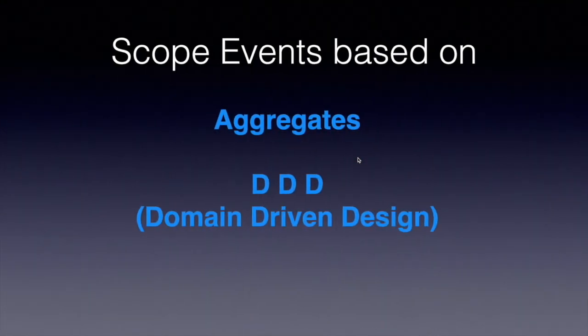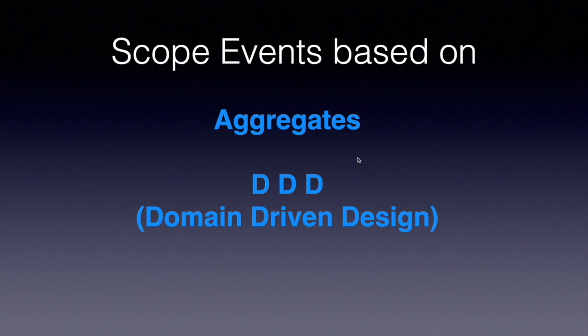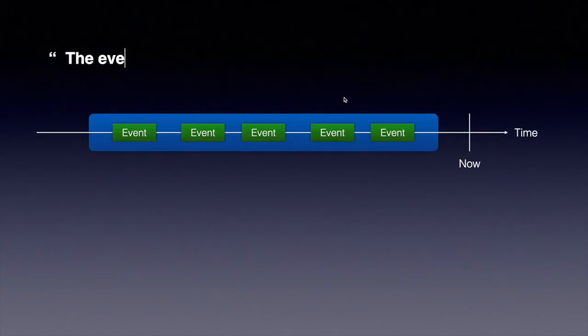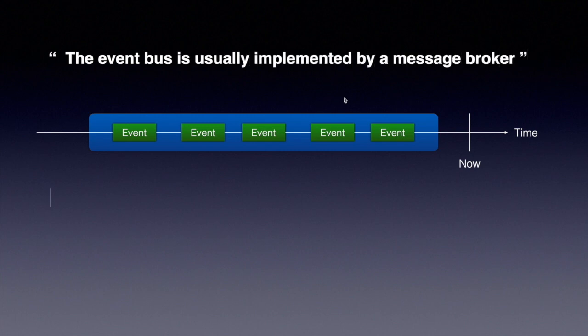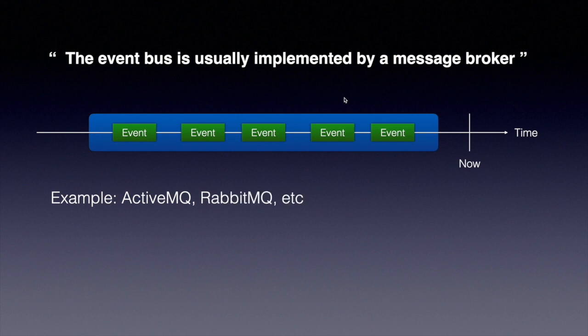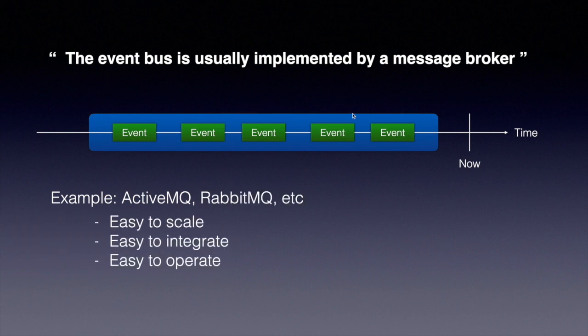How should we fine-grain the entities? In present systems we find many entities and it feels very hard to fine-grain them in the business domain. Domain-driven design says: scope your events based on aggregates. Aggregates are a group or collection of entities bounded to a specific business context. We collect all events based on the aggregates, and we must have one root entity for any business context — this root entity is responsible for the life cycle of the object graph. The event bus is implemented by a message broker such as ActiveMQ or RabbitMQ, which are easy to scale, integrate, and maintain.